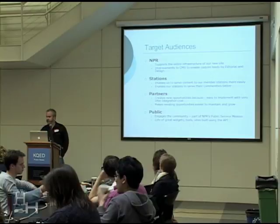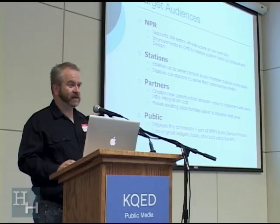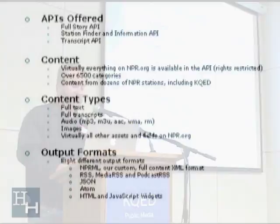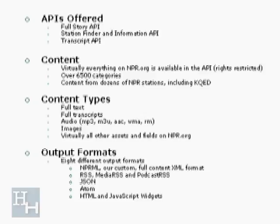There's a bunch of existing widgets and tools built already. The API suite is composed of the full story API, Station Finder Information API, and the Transcript API. Pretty much everything on NPR.org is available via the API, with some rights restrictions for images and content.